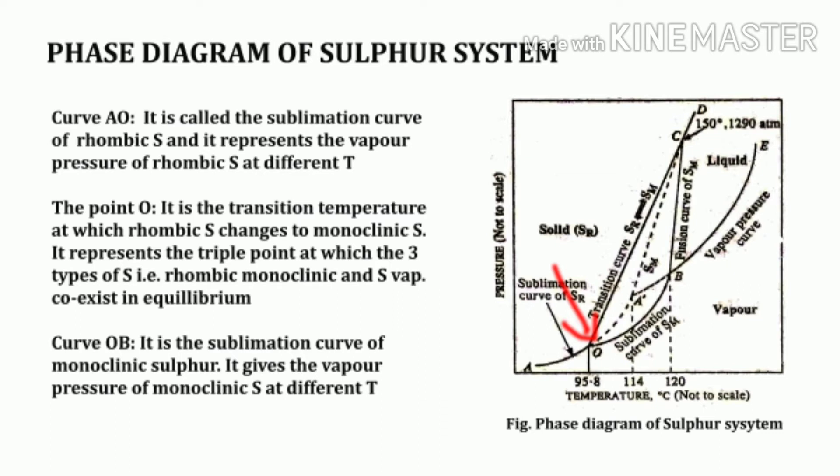Point O is a triple point at which three phases — two solids and the vapor phase — coexist in equilibrium. Since it is a three-phase, one-component system, it is non-variant, meaning F = 0. The curve OB is the sublimation curve of monoclinic sulfur, giving the vapor pressure of monoclinic sulfur at different temperatures. Since the number of phases is two, this system is also monovariant.